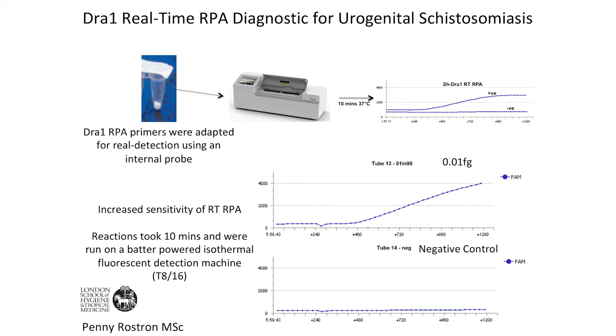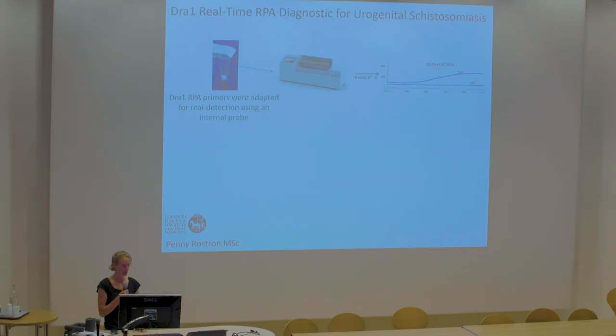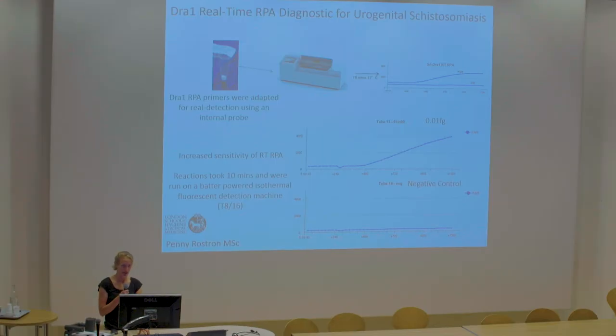We then moved the assay on to develop a fluorescence-based system, which I prefer because it cuts out the risk of contamination. With the lateral flow system, you actually have to open those tubes, creating contamination risk. This is a closed system where you never open those tubes again. We got much higher sensitivity with this assay, getting down to 0.01 femtograms of DNA.